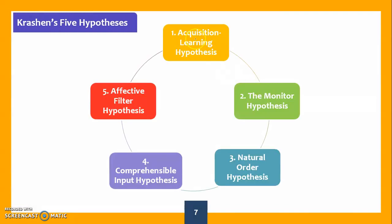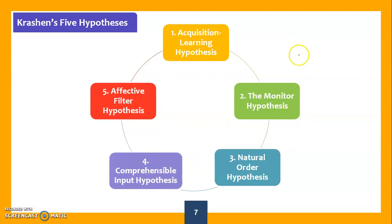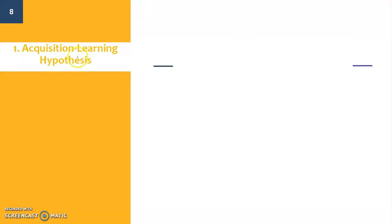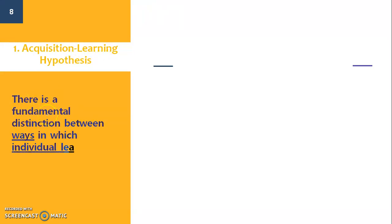The five hypotheses are: first, the acquisition-learning hypothesis, which distinguishes between the two terms; second, the monitor hypothesis; third, the natural order hypothesis; fourth, comprehensible input; and fifth, the affective filter hypothesis. These five hypotheses are interconnected and explain the overall model.